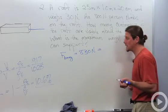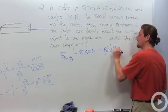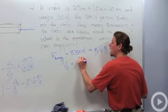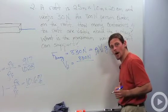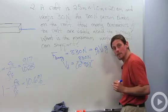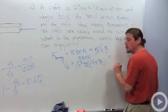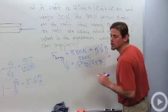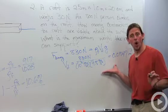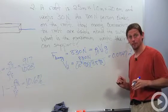The buoyant force always equals the density of the fluid times the volume displaced times gravity. So I can solve for the volume displaced: it equals 830 newtons divided by the density of the fluid — we'll take that to be water, 1000 kg/m³ — times acceleration due to gravity, 9.8 m/s². Doing that division gives 0.0847 cubic meters. That's how much of the raft's volume is displacing the water, meaning it's underneath the water.